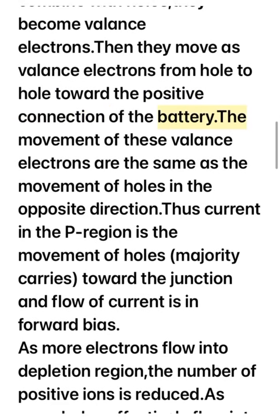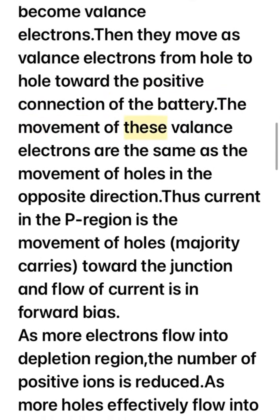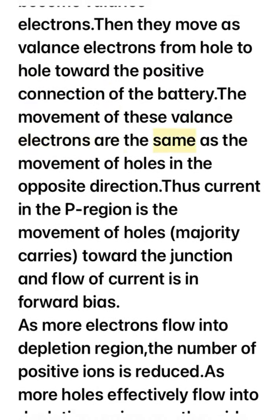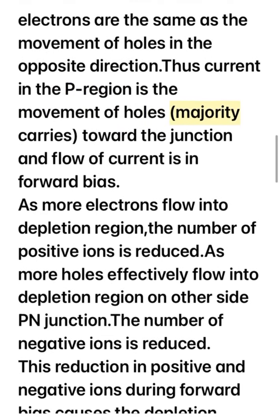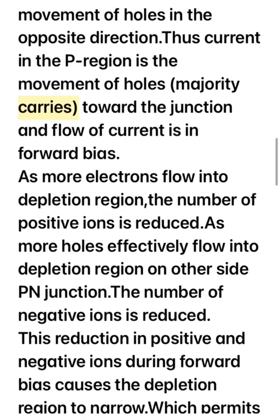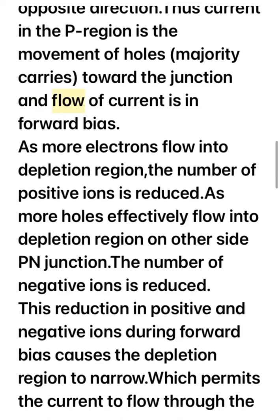The movement of these valence electrons is the same as the movement of holes in the opposite direction. Thus, current in the P region is the movement of holes — majority carriers — toward the junction, and flow of current is in forward bias. As more electrons flow into the depletion region,